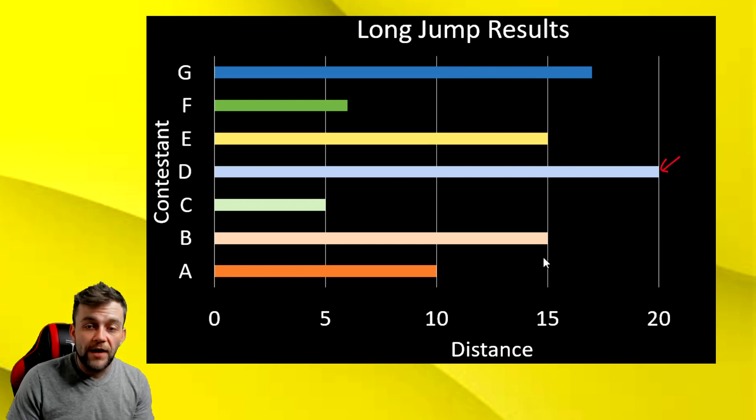Well, here is the winner right here. They jumped the farthest out of everybody. And the person that jumped exactly half as far as them is this person, contestant A. So we'll put a star on contestant A's bar graph.